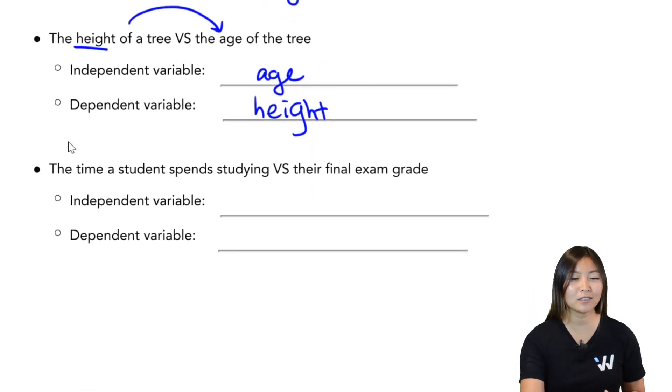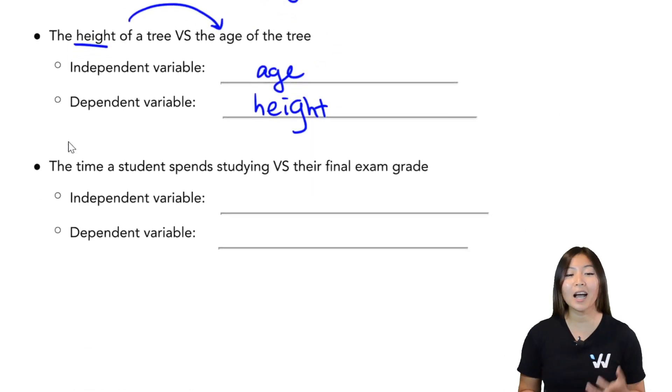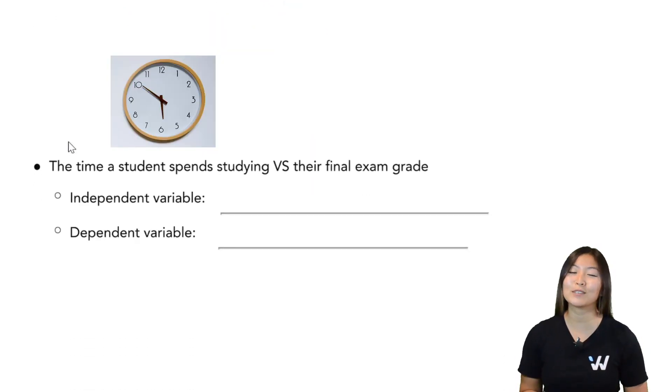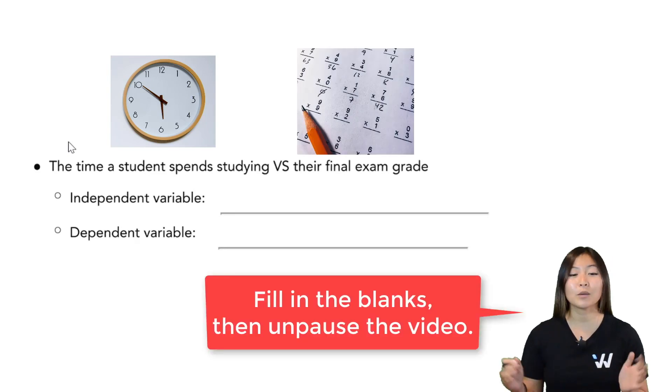All right, one more for us to do here. We have the time a student spends studying versus their final exam grade. So I'm going to pause the video at this point. Feel free to write down what you think the independent and dependent variables are.